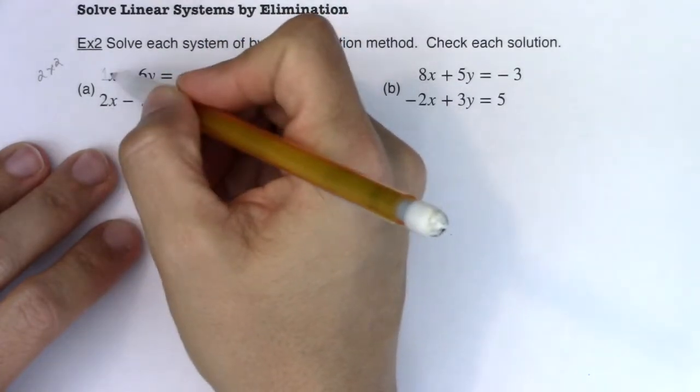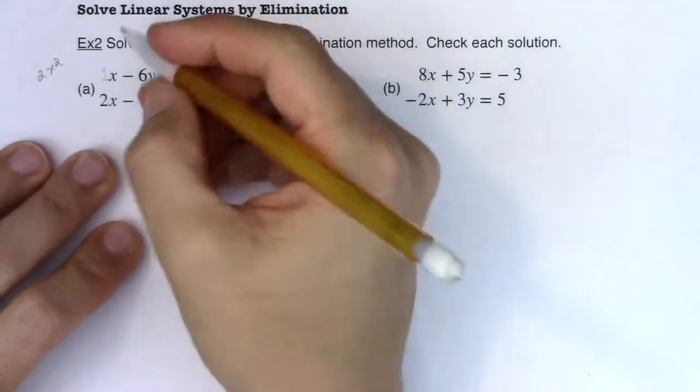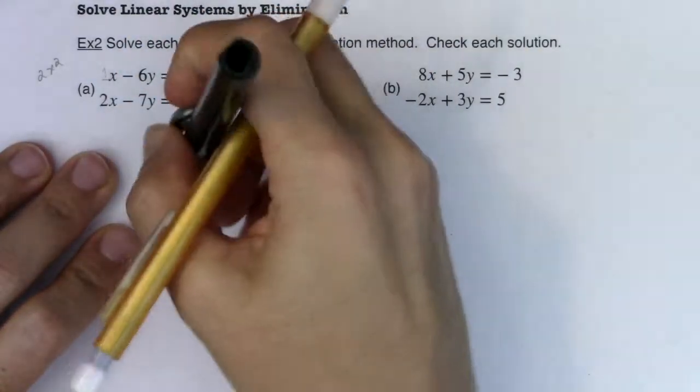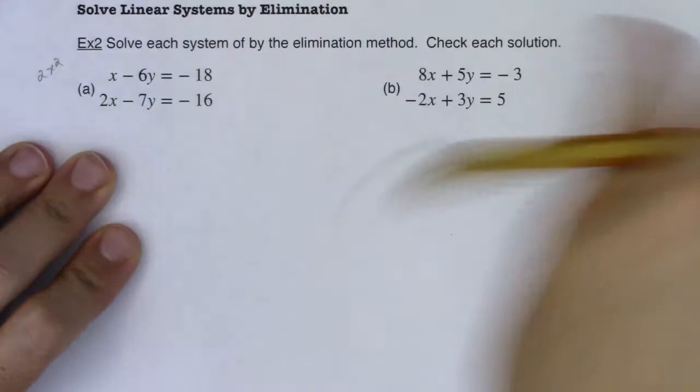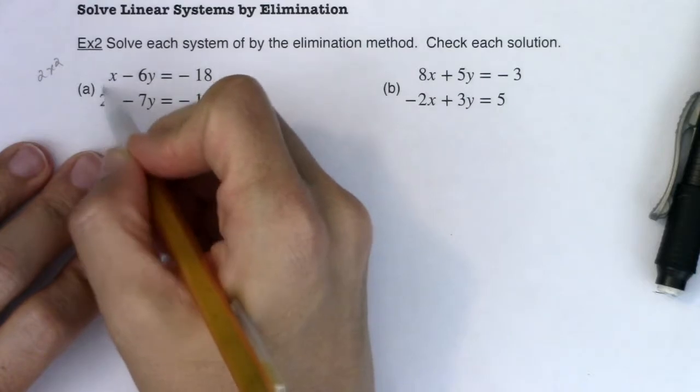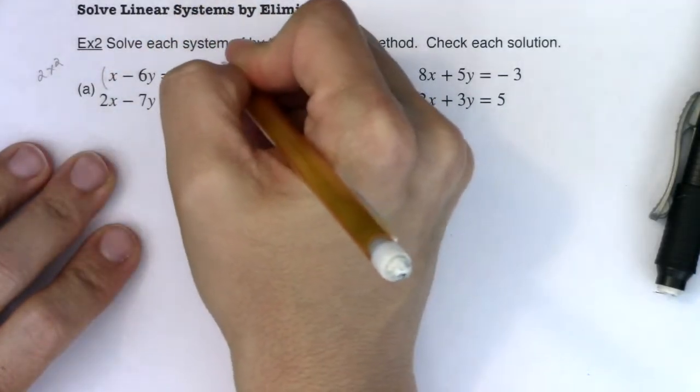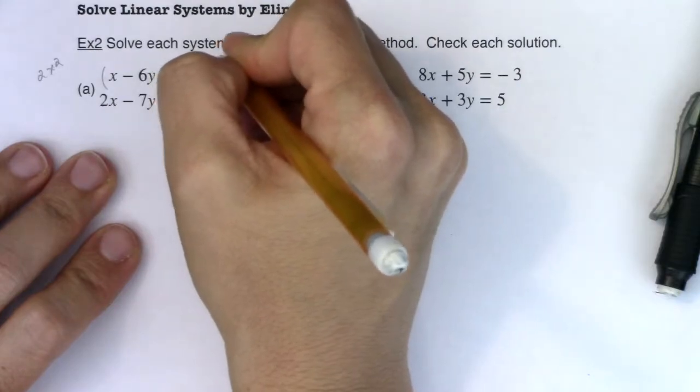The reason I'm going to go for x is because it's easier to multiply one to get to two. Alright so what I'm going to do here is I would like this coefficient to be two, but I would like it to specifically be negative two so that it has the same magnitude but different sign. So I'm going to multiply every term in this equation by negative two.